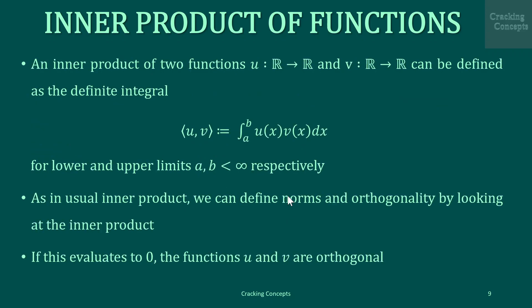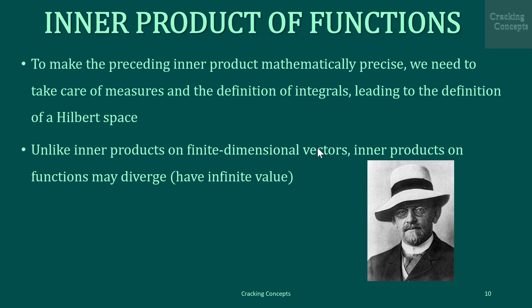Thus the inner product of two functions u and v mapped from R to R can be defined as a definite integral: the inner product of u and v equals the integral from a to b of u(x) v(x) dx. As with the usual inner product, we can define norms and orthogonality: if this integral evaluates to zero then the functions u and v are orthogonal. To make this mathematically precise we need to consider measures and the definition of integrals, leading to the concept of a Hilbert space.